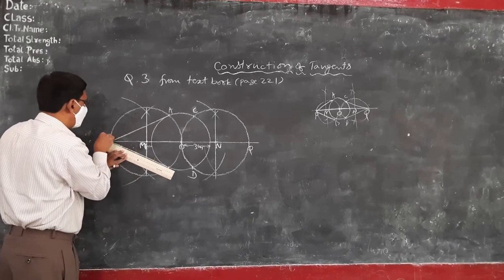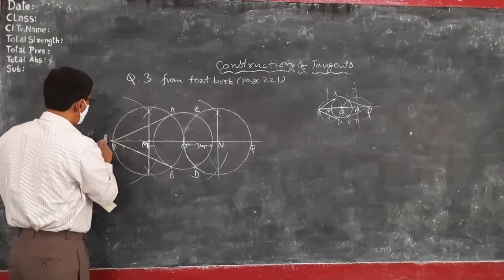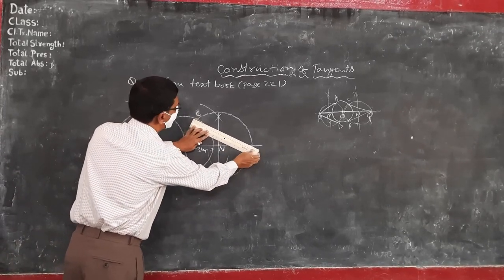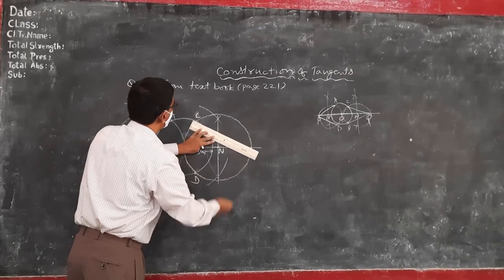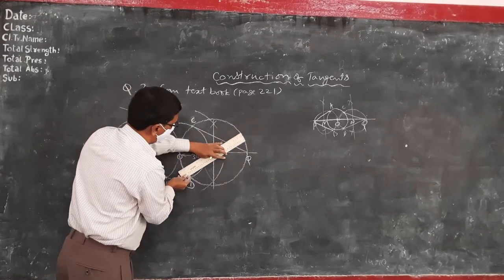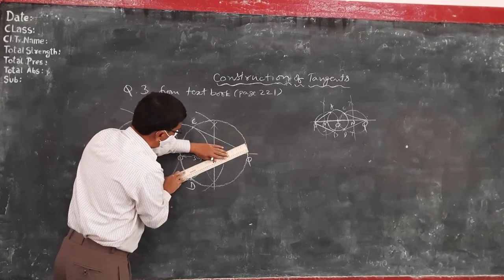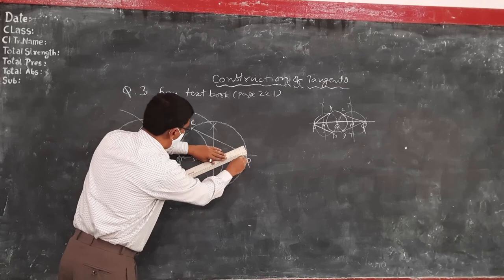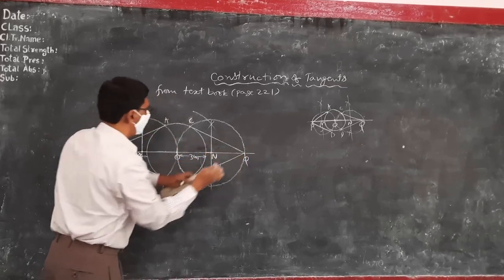And Q, C. And Q, D. These are the tangents. And measure these tangents. They are of the same length. All the four are of the same length.